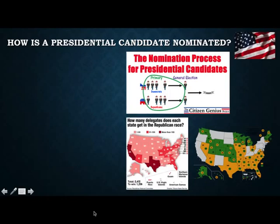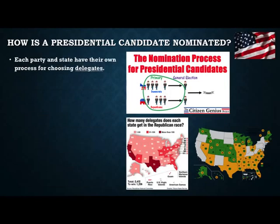There are two parts to the presidential election process. The first part is called nominations — being chosen by your party to be the candidate for president. Each party and state has its own process for choosing people called delegates. Delegates are people who go to a convention in the summer and vote for who they want the candidate to be. There are two ways to choose delegates: one is called a primary and the other is called a caucus.